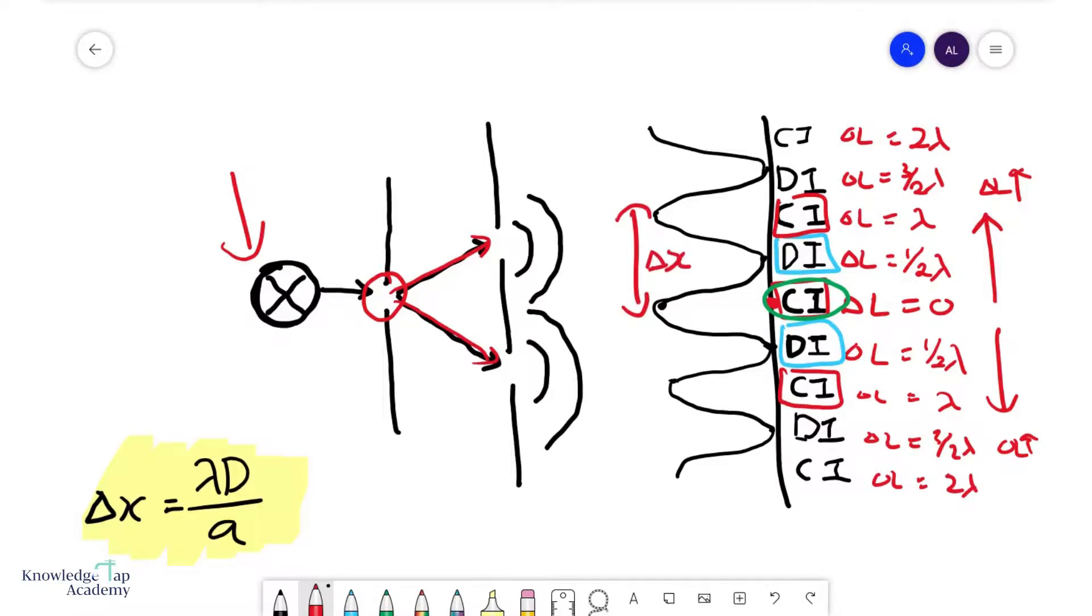but this can also be the separation between two consecutive destructive interferences, so these separations are uniform throughout. Delta x equals the wavelength of your source times the distance D from the two coherent sources to the screen, divided by a, the slit separation.